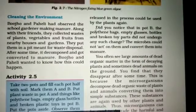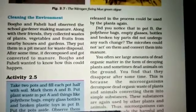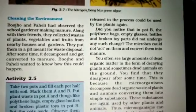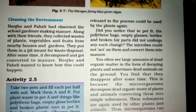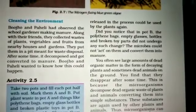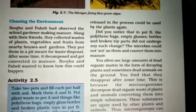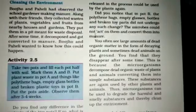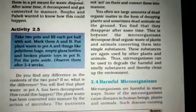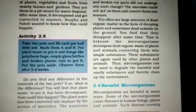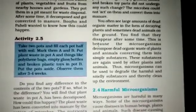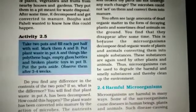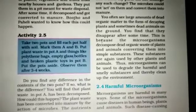How does it happen? Because there are many microorganisms present in the air and soil which decompose dead organic waste of plants and animals, converting them into simple substances. The plant waste is converted into manure by the action of microbes. The nutrients released in the process can be used by the plants again. Thus, microorganisms can be used to degrade harmful and smelly substances and thereby clean up the environment.